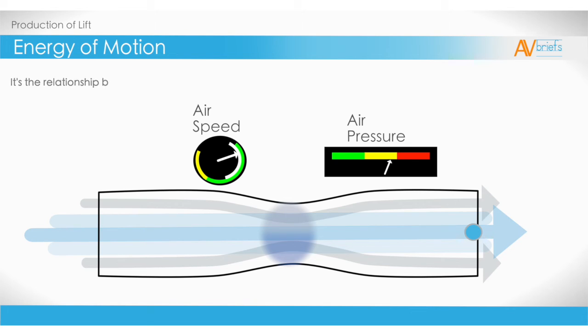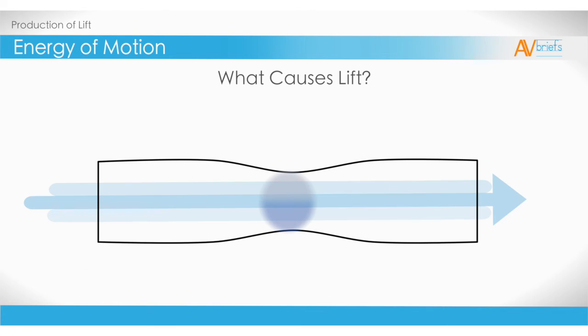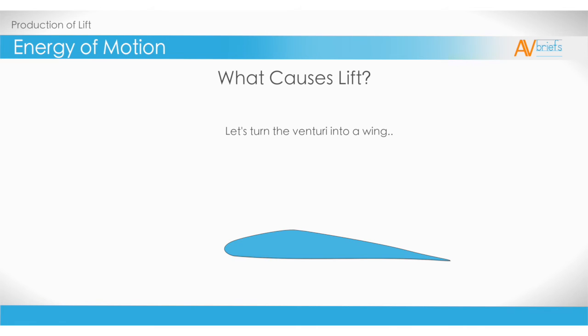It's the very same relationship between air speed and pressure that we were looking at. So this is all fun, but the question we need to answer is, what causes lift? And to explain that, we can turn the venturi into a cross-section of an airfoil. This airfoil is now our wing.